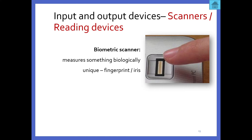There are also biometric scanners. You've probably seen in movies where someone scans their eye to get into a particular place, or puts their hand on a scanning device that reads fingerprints. We have these on some laptops as well. The whole idea is that it measures something biologically — whether it's your fingerprint or your eye. On some smartphones the phone will unlock just by looking at it a certain way.